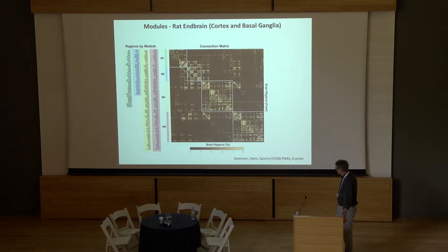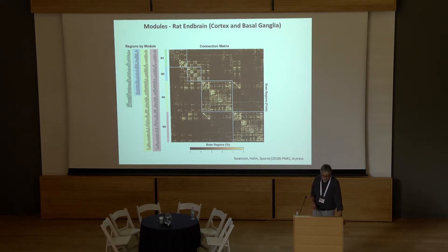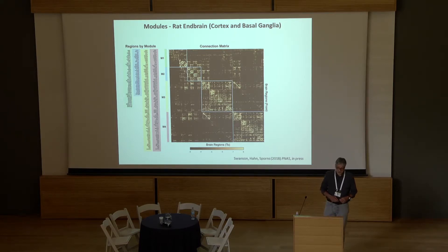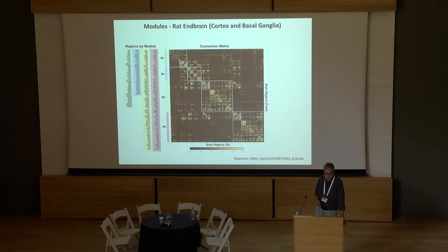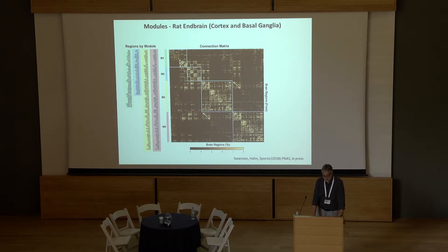In our latest work, coming out in PNAS, we look at connections between and within the two cortical hemispheres plus the basal ganglia and all interconnections between these structures — 244 regions in total. Here's a rendering in a modular ordering where we applied modular detection approaches to define modules and display the connection matrix, showing these dense clusters.